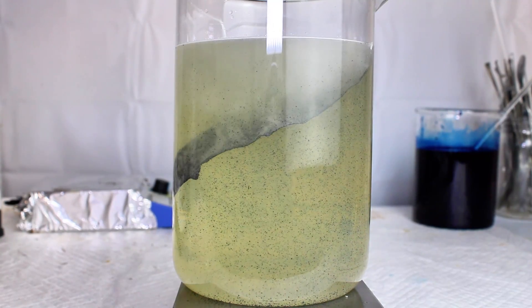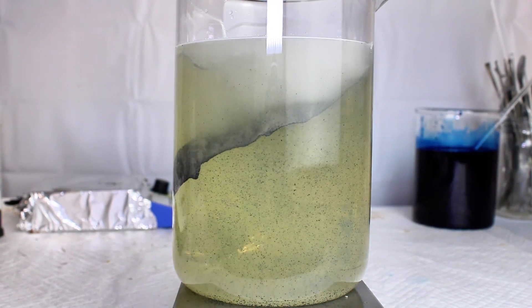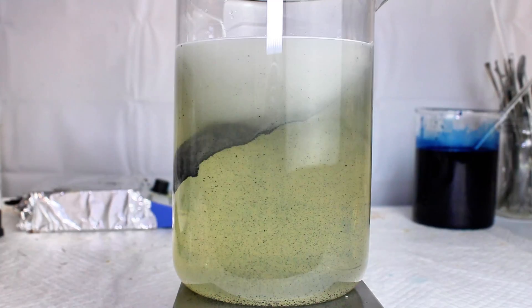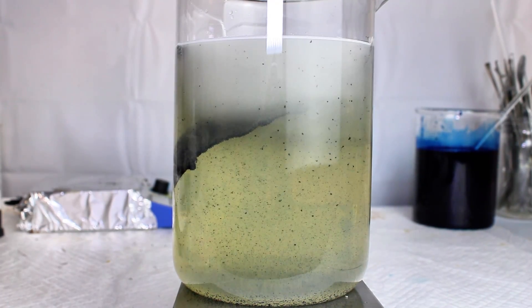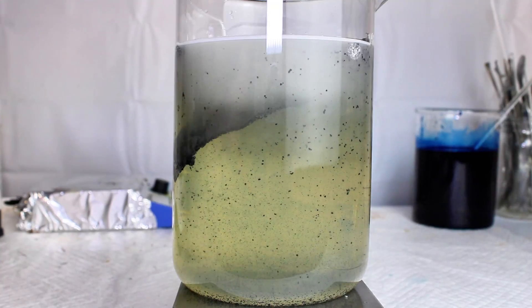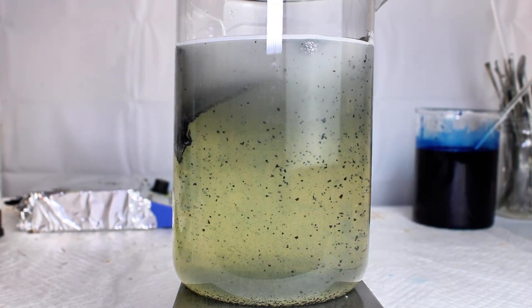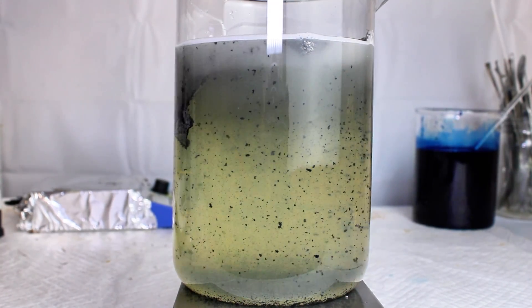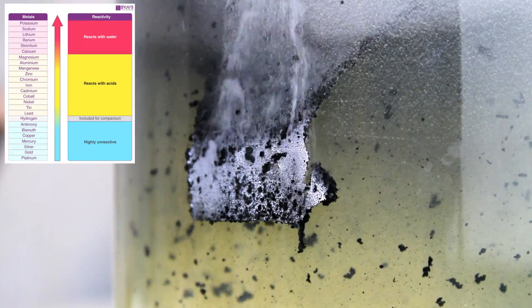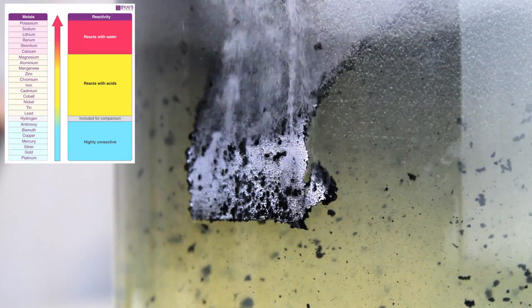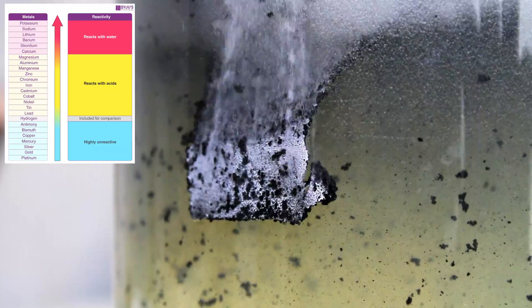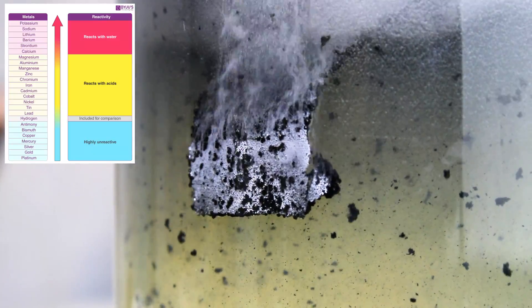This is called a single replacement or single displacement reaction, and it's a type of redox reaction where aluminum is oxidized and bismuth is reduced. I use this method fairly often to precipitate metals, and aluminum will effectively precipitate several metals, including gold, platinum, mercury, silver, copper, lead, tin, nickel, and cobalt, in that order.